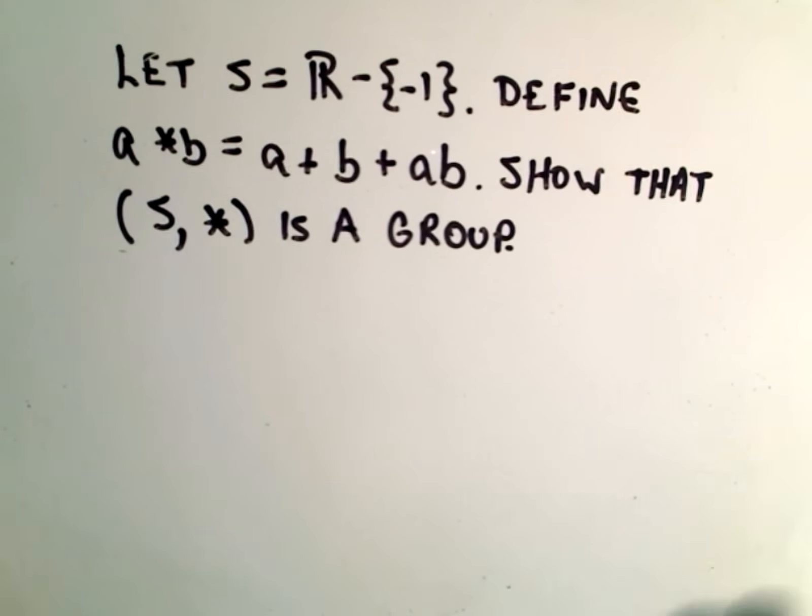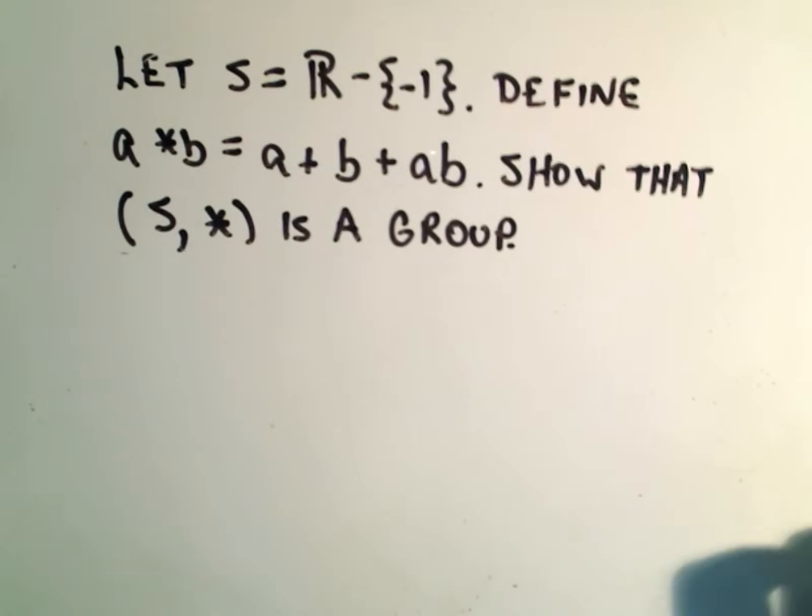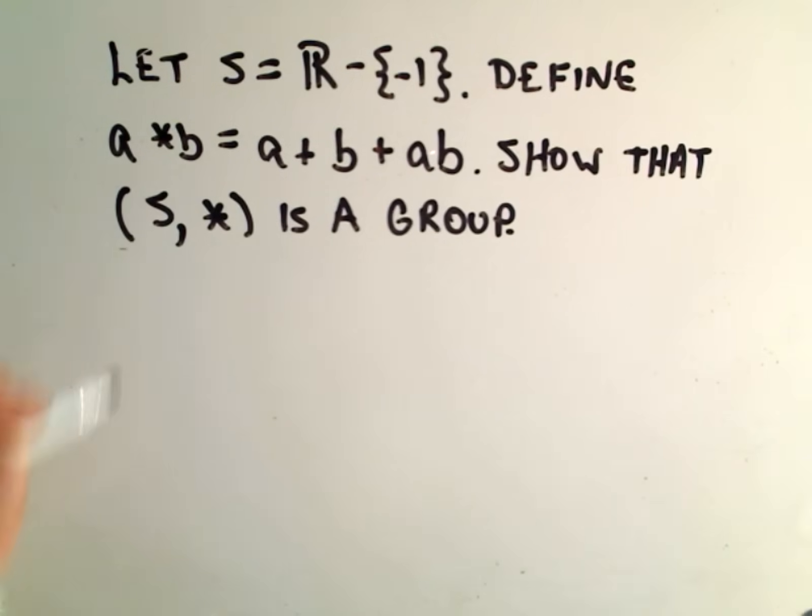In this example, we're going to look at the set of real numbers and we're going to exclude the number negative one. We're going to show that this produces a group.